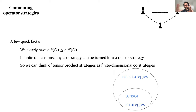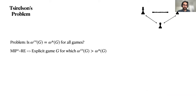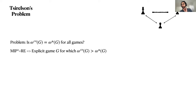We define the commuting operator value of a game to be the supremum of winning probability over all commuting operator strategies, denoted omega_co of g. This is in contrast with omega star of g, the finite dimensional or tensor product value. For CHSH, the commuting operator value and the tensor product value are the same. The commuting operator value is always at least as large as the tensor product value because the set of possible strategies is larger. The question of whether the tensor product value and commuting operator value of all games are the same was a very important open problem known as Tsirelson's problem. One of the major consequences of MIP* = RE is that it answers this problem: there exists an explicit game g for which the commuting operator value is strictly larger than the finite dimensional value.